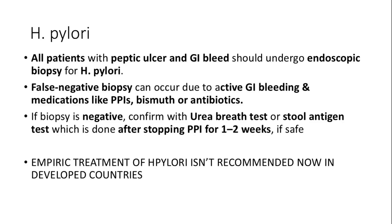For all patients with peptic ulcer disease or GI bleeding, perform an endoscopic biopsy to test for H. pylori. Be aware that false negative results can occur, especially if the patient has active GI bleeding or is on PPIs, bismuth, or antibiotics. If the biopsy comes back negative, confirm the diagnosis with a urea breath test or stool antigen test.